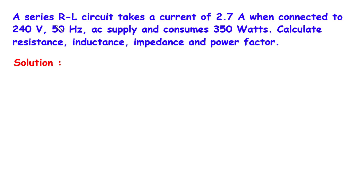If you find this video helpful, feel free to donate whatever amount you can — link is in the description below. A series RL circuit takes a current of 2.7A when connected to a 240V 50Hz AC supply and consumes 350W. Calculate resistance, inductance, impedance, and power factor.